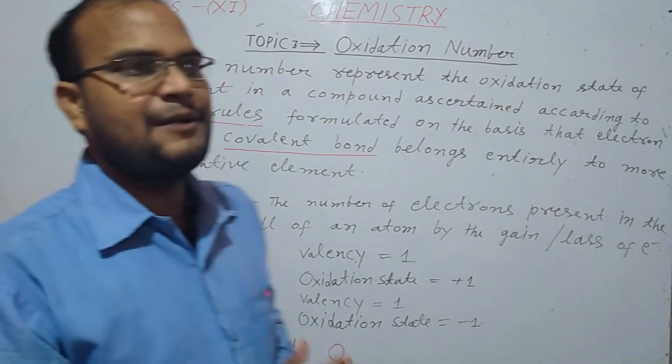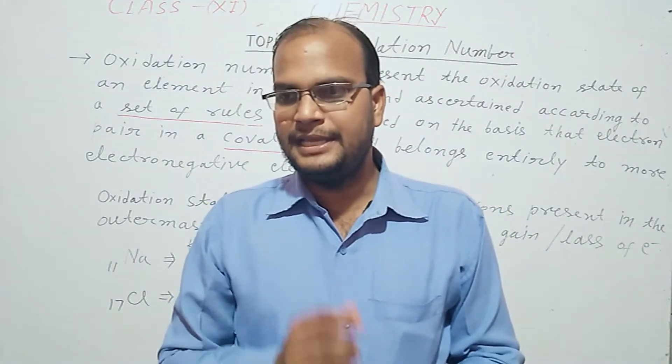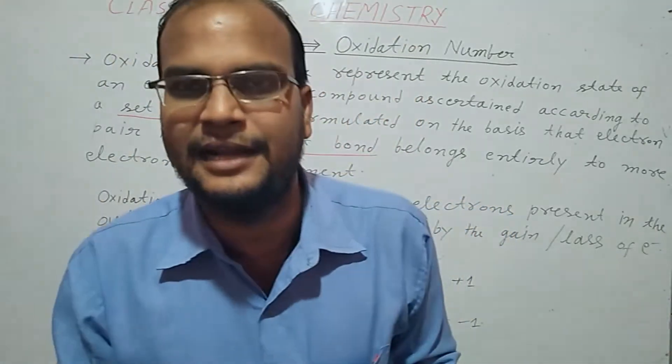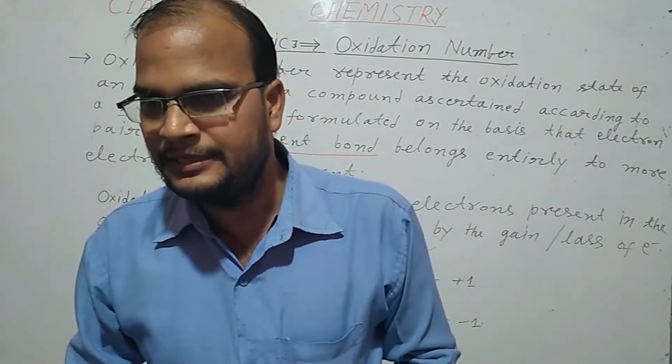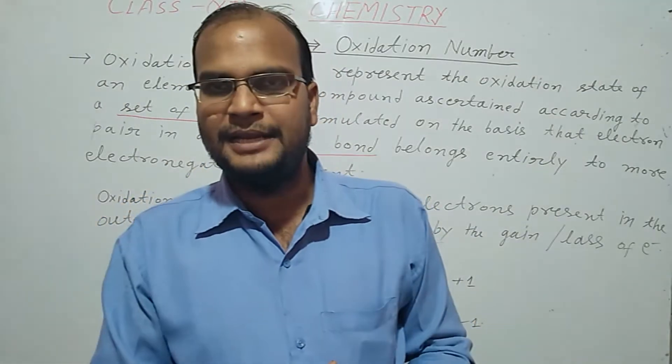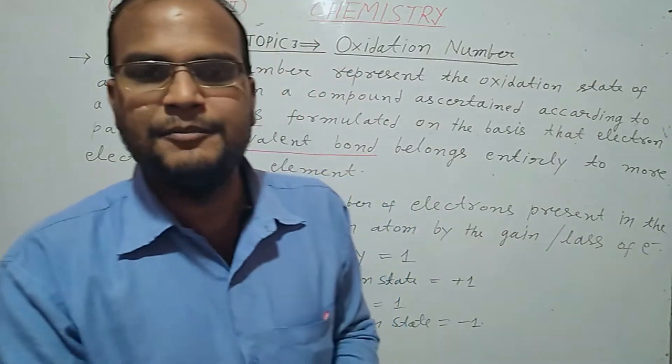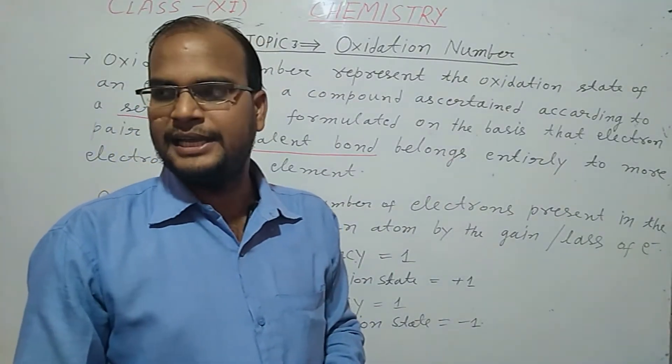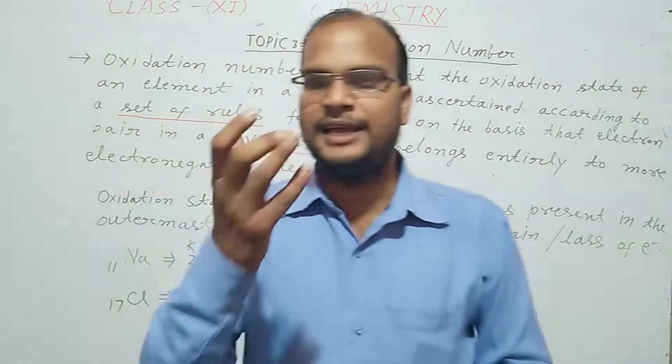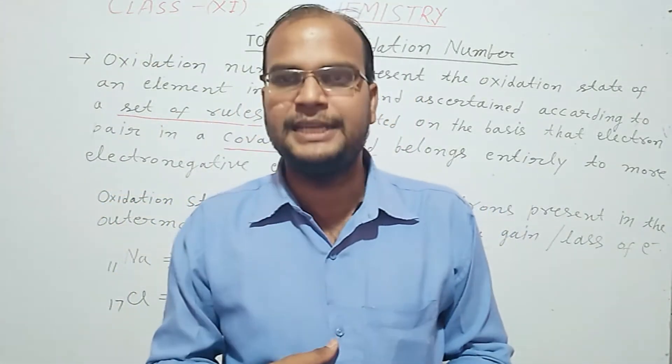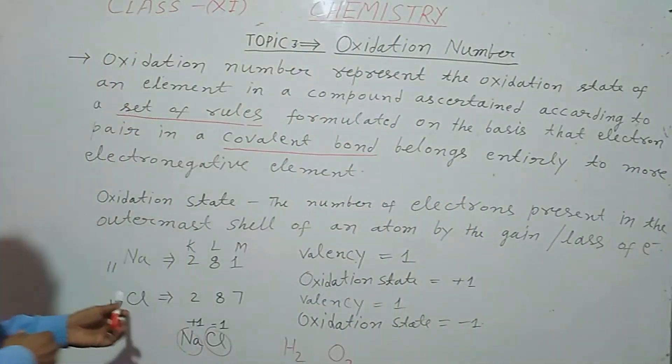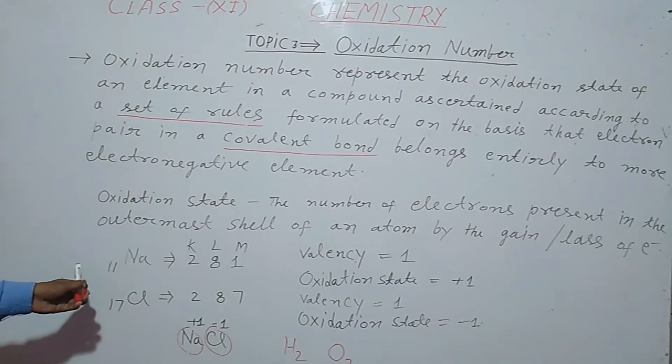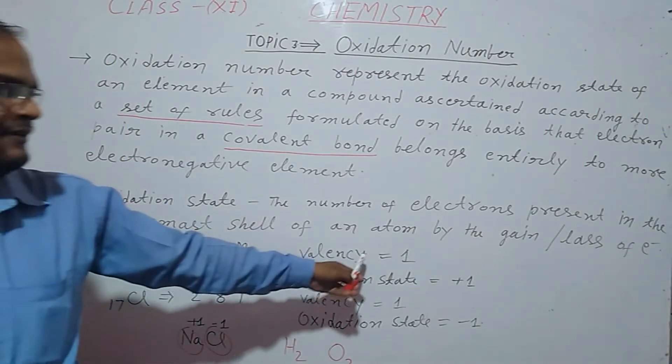The combining capacity of an element to another element by the gain and loss of electrons is known as valency. Valency is a Latin word, valencia, which means power, capability.